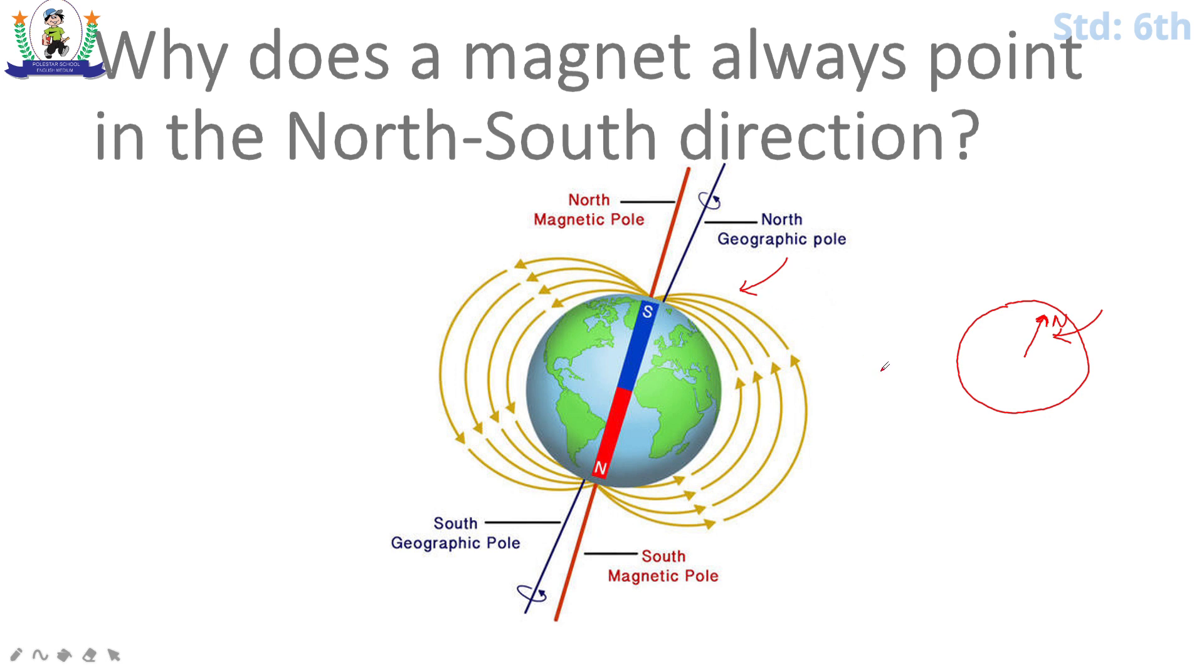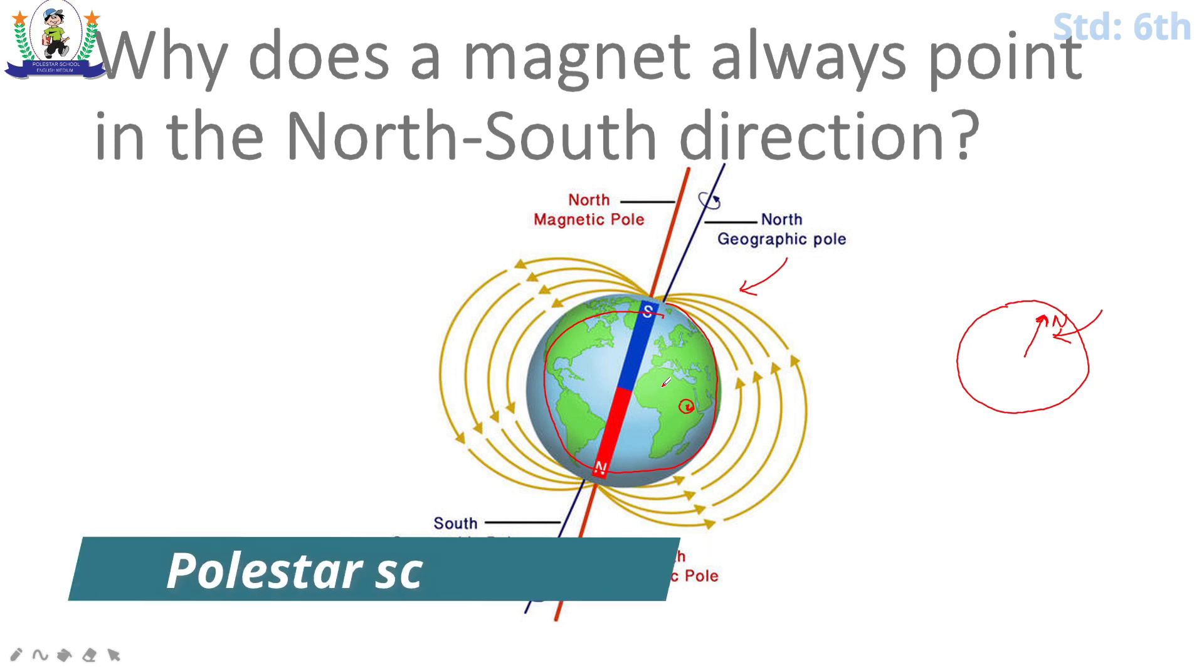So if this is the entire Earth, you can go to any country. If you have a compass, then you can find the north direction because the compass shows the north direction. So that is why no matter where you place the compass, its needle will always point in the north-south direction.